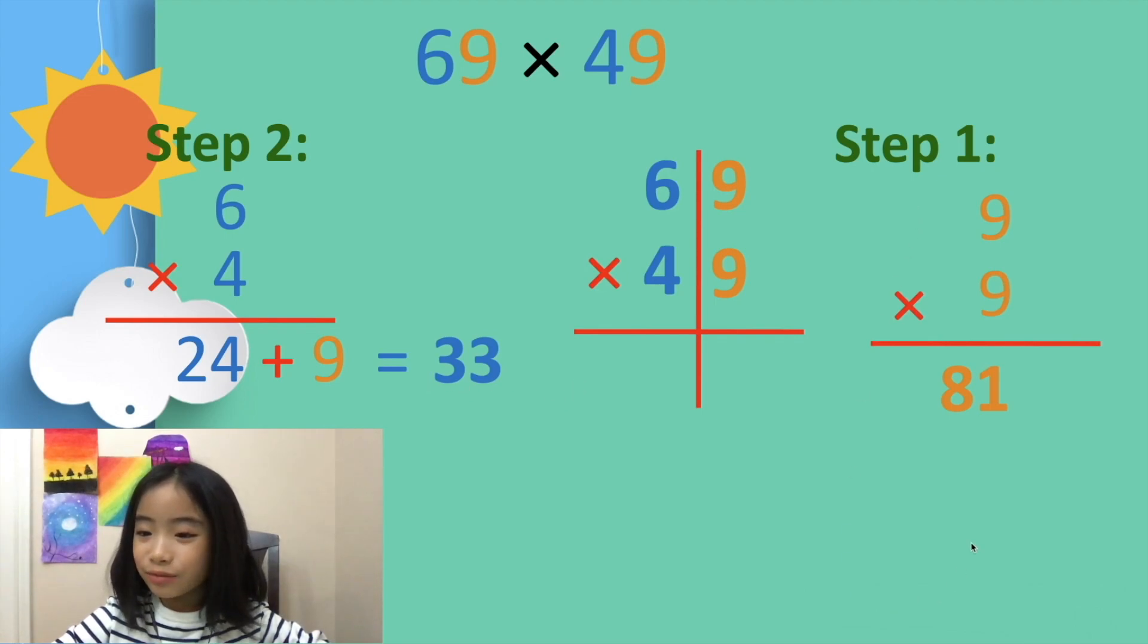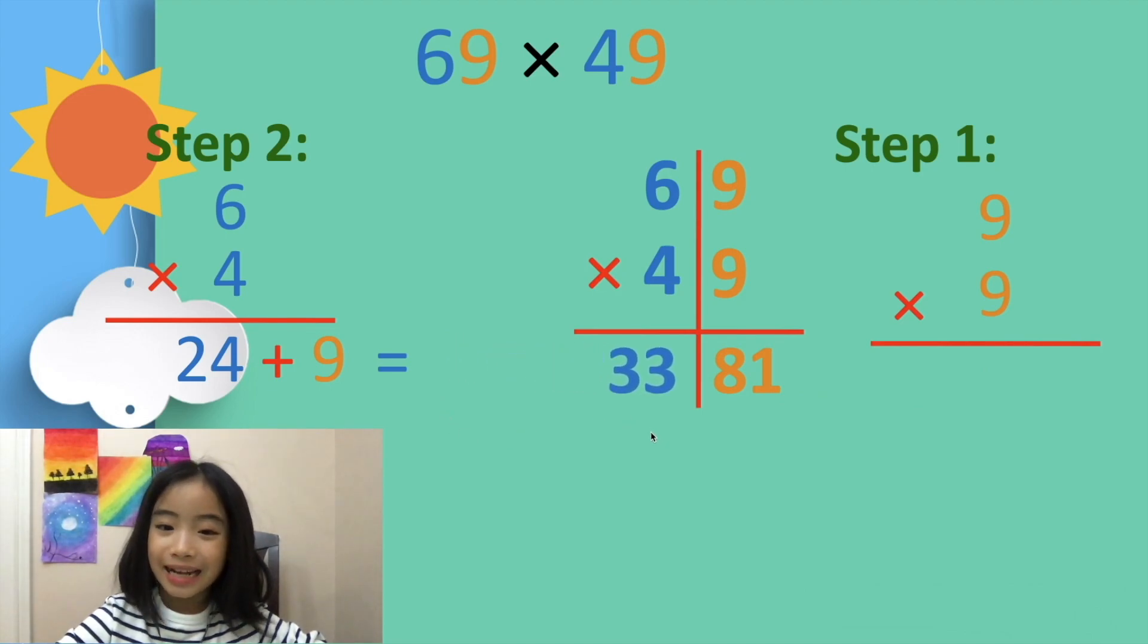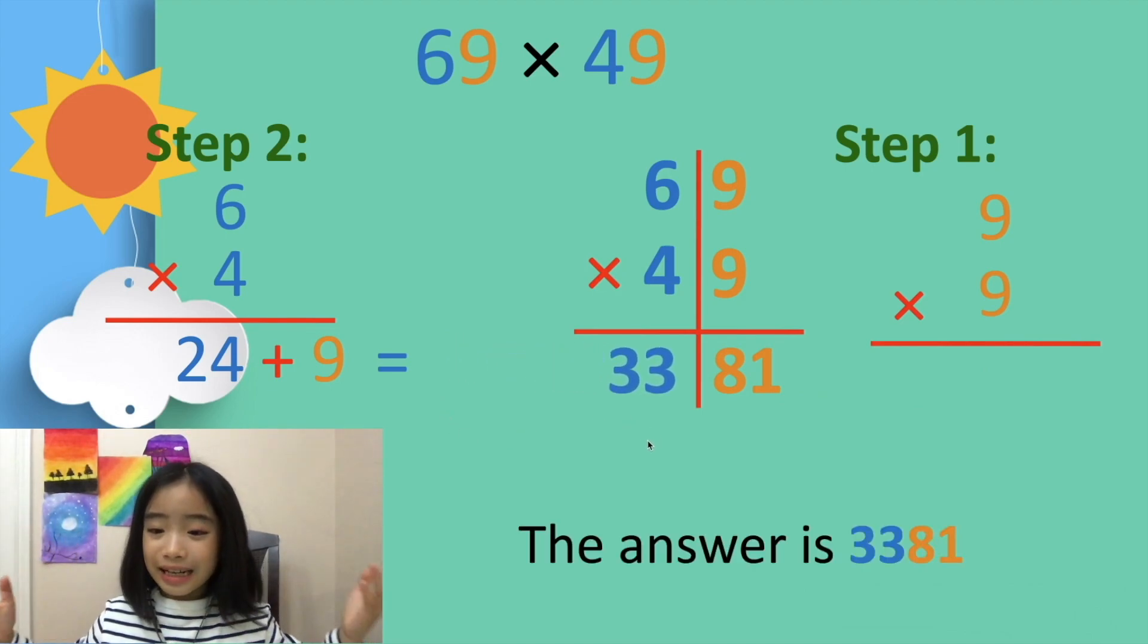We put the 81 on the right side and the 33 on the left side. So, the answer is 3381.